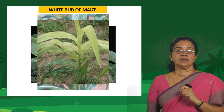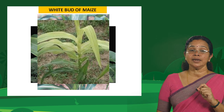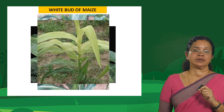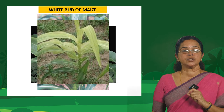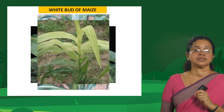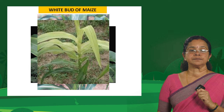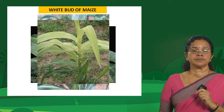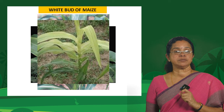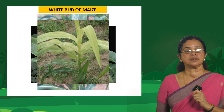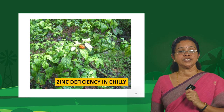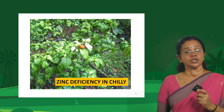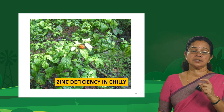Another zinc-related disorder is the white bud of maize — because zinc has a role in auxin metabolism, it affects the tip of the plant, causing the bud region to turn white. Another typical symptom is mortal leaf of citrus. In chili, you can see a whitish coloration on the leaves due to zinc deficiency, appearing in both the older and younger leaves.